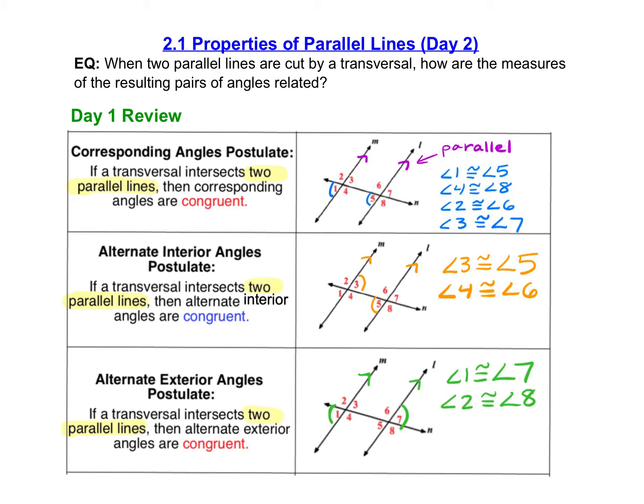Next, we have the alternate interior angles postulate, which tells us that if a transversal intersects two parallel lines, then alternate interior angles are congruent. The alternate exterior angles postulate tells us that if a transversal intersects two parallel lines, then the alternate exterior angles are congruent. So these first three angle pairs are all congruent, provided that the two lines being intersected by the transversal are parallel.